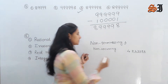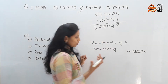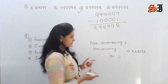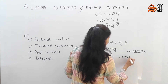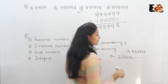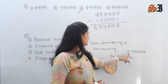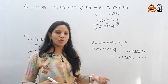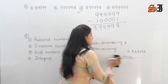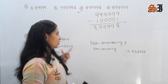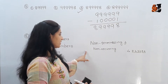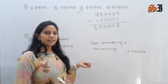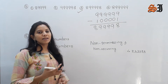Non-terminating and non-recurring means the digits never end and never repeat. For example, pi — 3.14159265... — these are all different digits. Recurring numbers repeat, but non-recurring means digits differ. So non-terminating and non-recurring numbers are irrational numbers, like root 2, root 3, root 5.